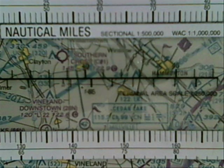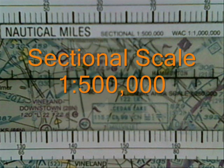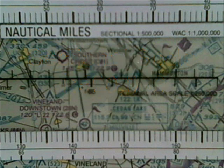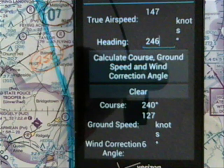Next, use your plotter to measure the distance on each segment. Be sure to use the 1:500,000 scale on your plotter, then fill in your navigational log with that information. Next, compute your estimated ground speed using your electronic E6B computer and fill in your navigational log.